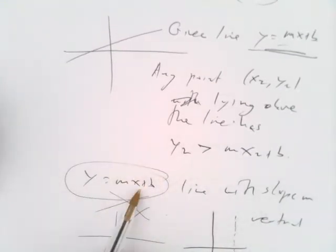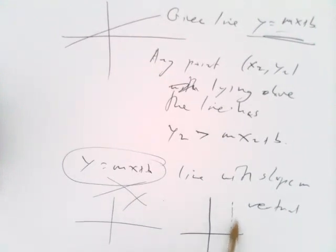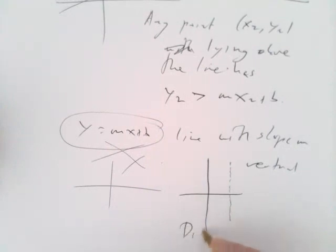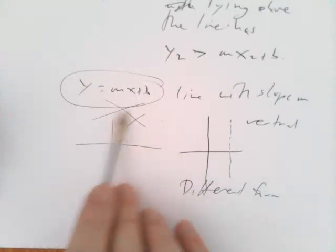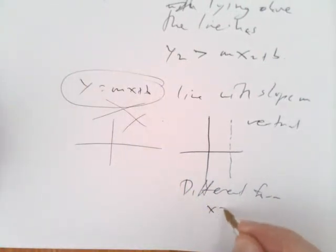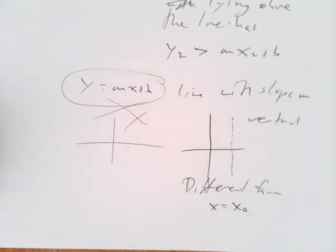For a vertical line, this kind of equation doesn't make sense because all the x's are the same, so it doesn't have that form. It has a different form. It's the only type of line that doesn't have this form. It has the form x equals some constant x0.